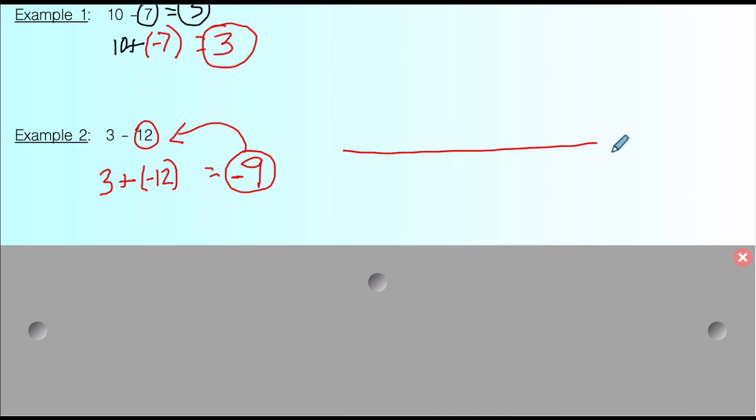If you want a visualization of that, use a number line. We're starting at positive 3, and we're subtracting. Subtraction moves to the left on a number line, and we're moving back 12 spaces. If you counted back 12 spaces, whatever, you could actually count it. Where would you end up? You'd end up at -9.